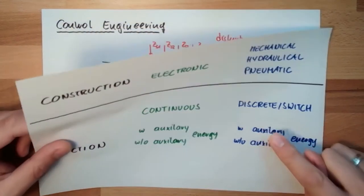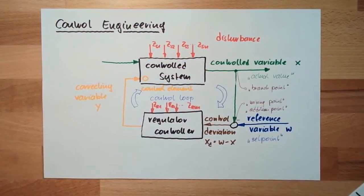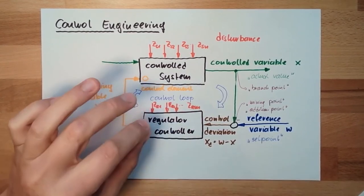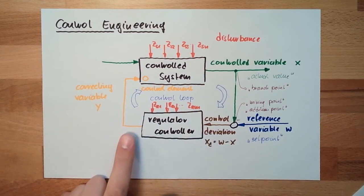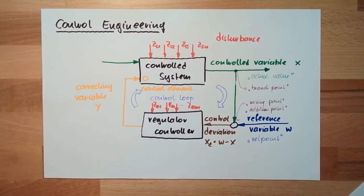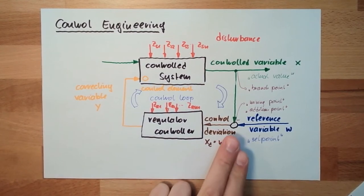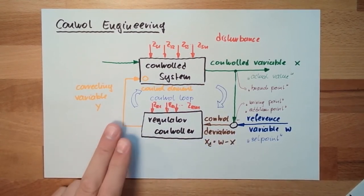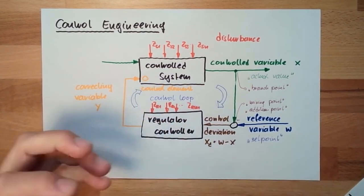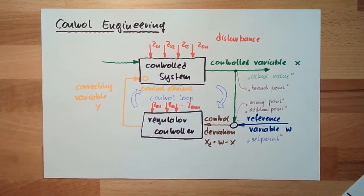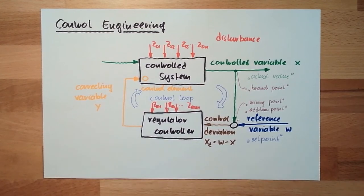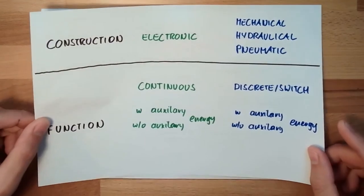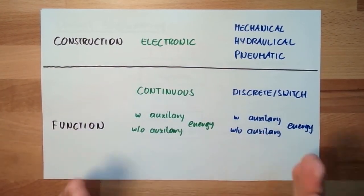With auxiliary energy is always necessary if what is coming out here is a different type of energy than what is needed. For example, if we have pressure here but need electrical power, we would need auxiliary energy. Most systems will have auxiliary energy. So these are the ways of how to categorize controllers.